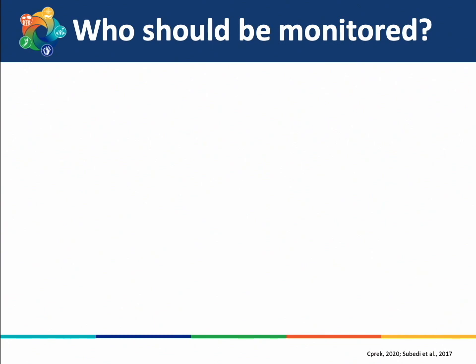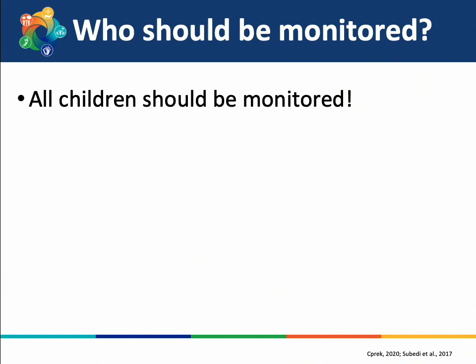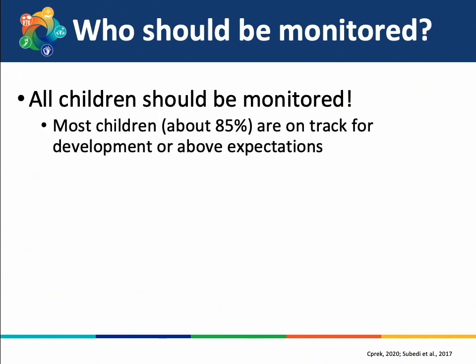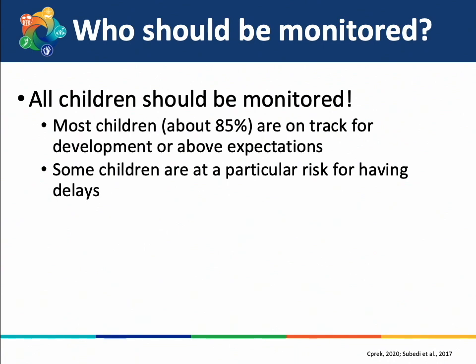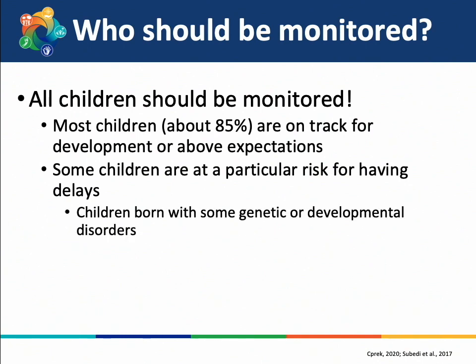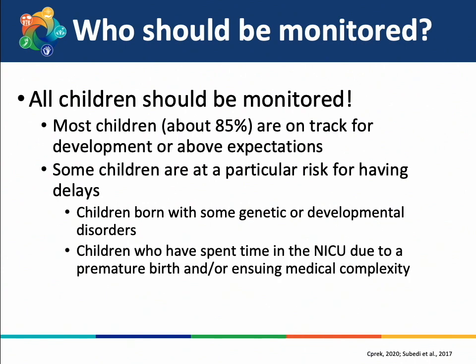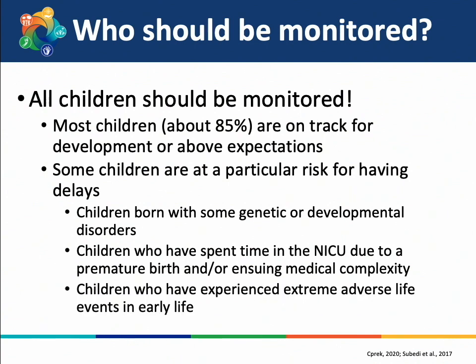So who should be monitored? We are sharing this information with you as parents because all children will benefit from developmental monitoring. At the same time, most children — about 85% — are on track for development. However, some groups of children are at risk for having a delay, including children born with genetic or developmental disorders, children who spent time in the NICU due to premature birth or medical complexity, or children who have experienced extreme adverse life events such as abuse, exposure to violence, instability in the home, or neglect. Because these children are at risk, it is especially important to monitor their development.